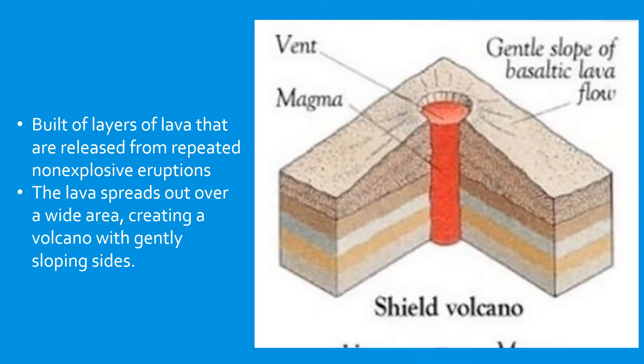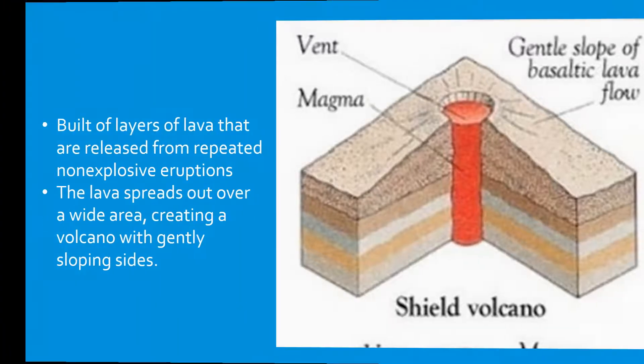A shield volcano is built up of layers of lava that are released from repeated non-explosive eruptions. The lava spreads out over a wide area, creating a volcano with gently sloping sides.